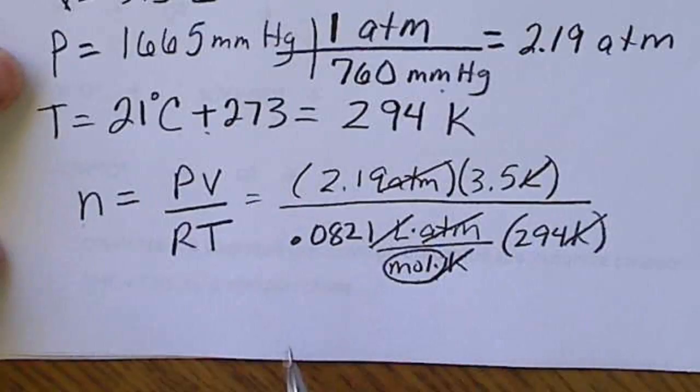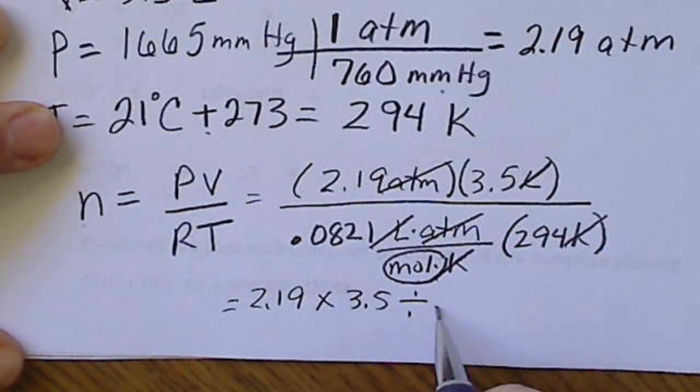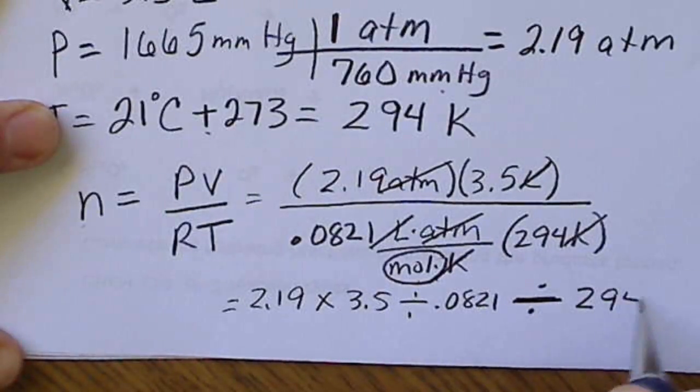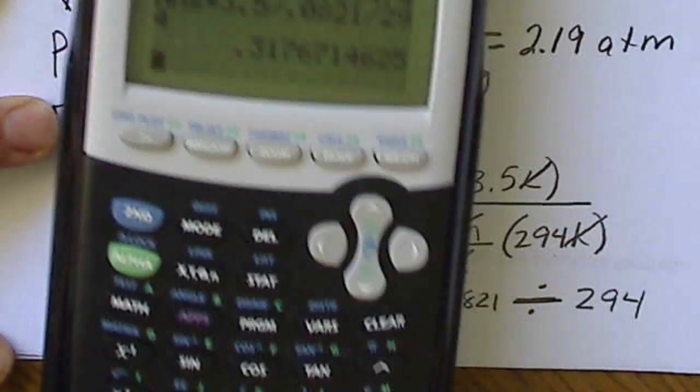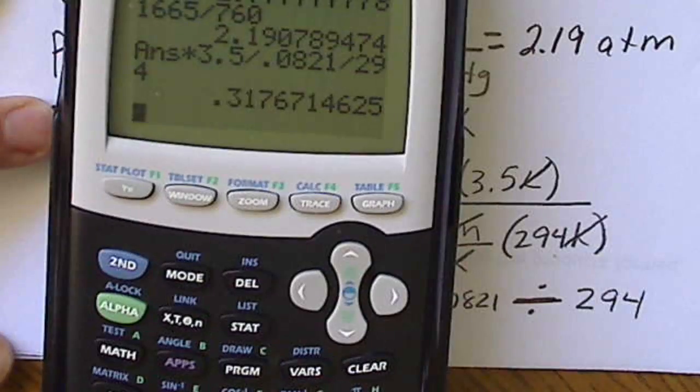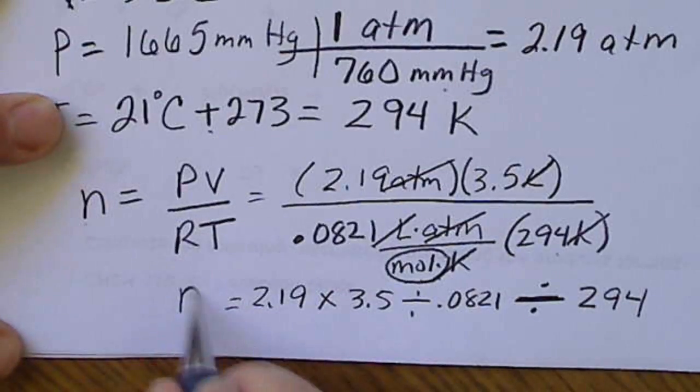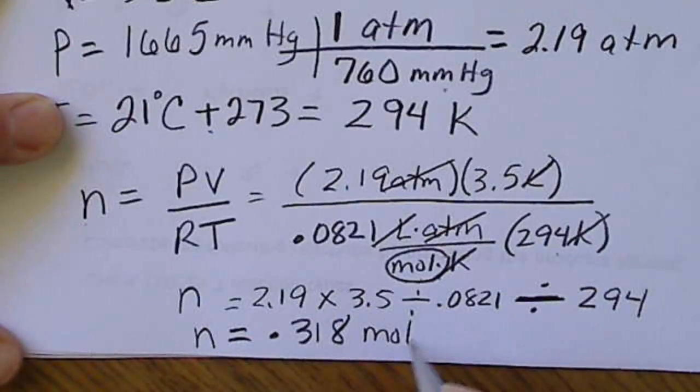And the best way to plug this in the calculator is 2.19 times 3.5, divide by 0.0821, and we want to remember to divide by that 294 because that number is in the denominator. So if we do that, we're going to get 0.317, we'll round that value to three significant figures. So we'll call that 0.318. So n is equal to 0.318, and the unit on n would be moles.